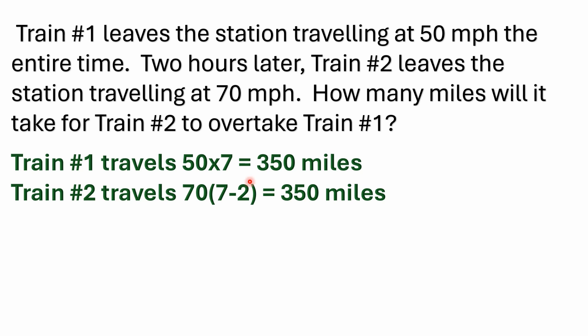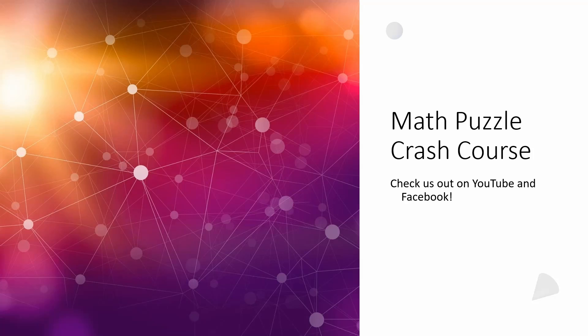That answer checks out: it takes seven hours for train number one to go 350 miles, and only five hours for train number two to go 350 miles. The question asked how many miles it takes for train number two to overtake train number one, and the answer is 350 miles. Hopefully this video has been helpful — please consider liking, sharing, and subscribing, and I look forward to seeing everyone in the next video.